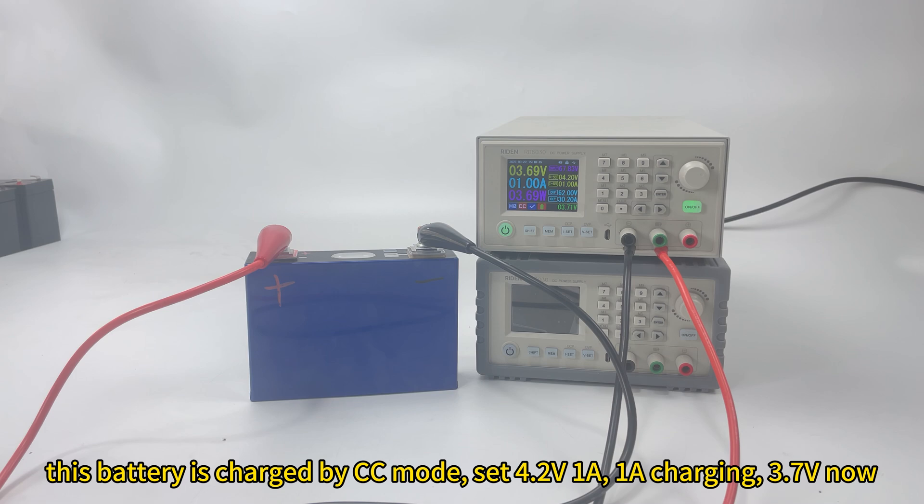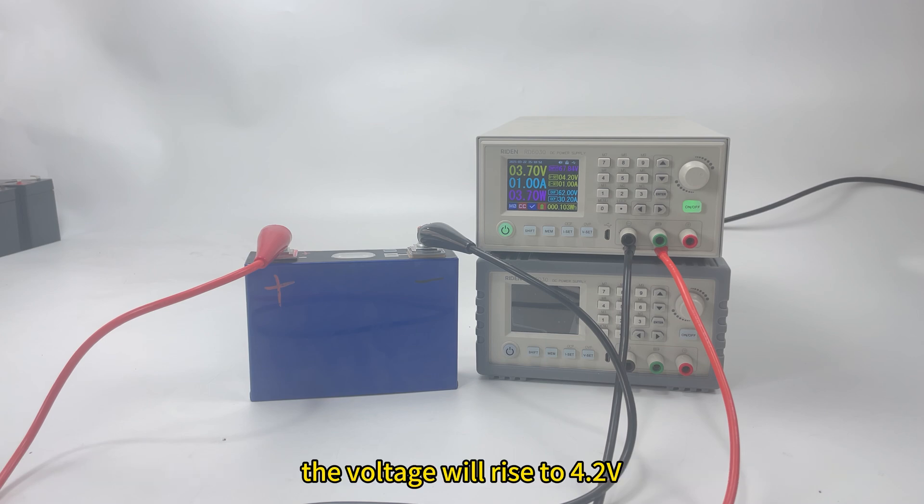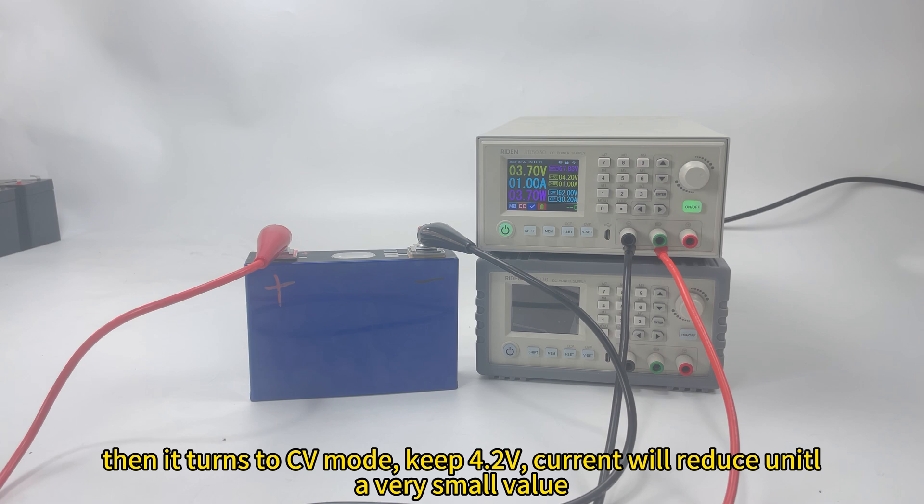The charging voltage is 4.2V and for now it is 3.7V. The current is constant and the voltage will rise to 4.2V. And at that time, it will turn to CV mode. The voltage is constant and the current will reduce to a very small value.